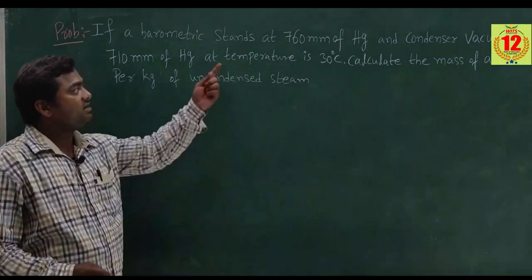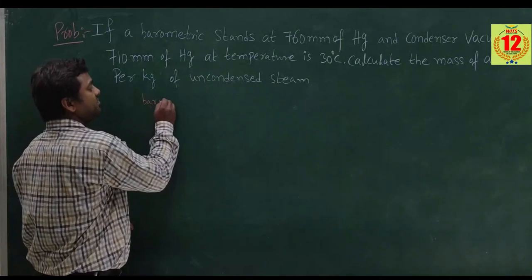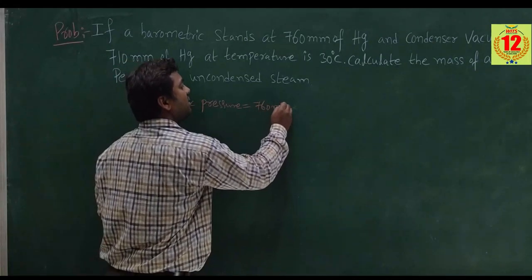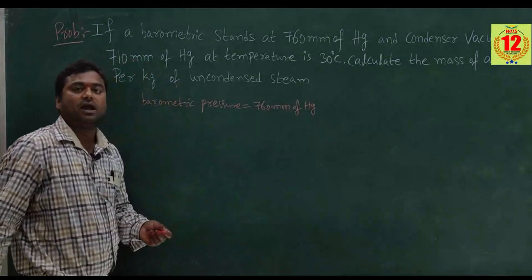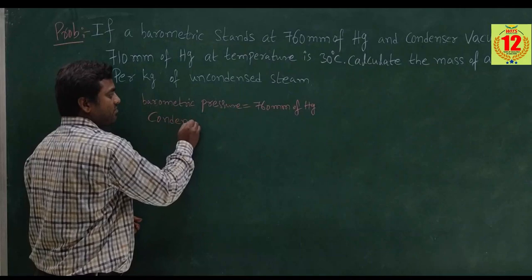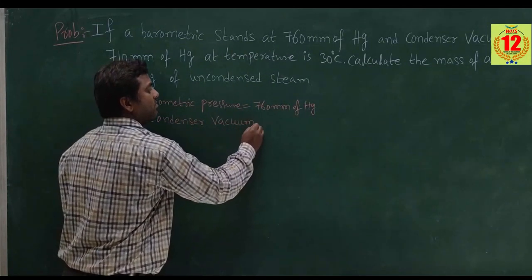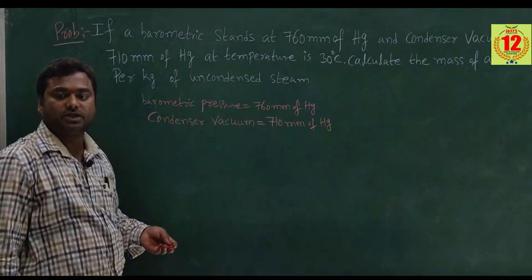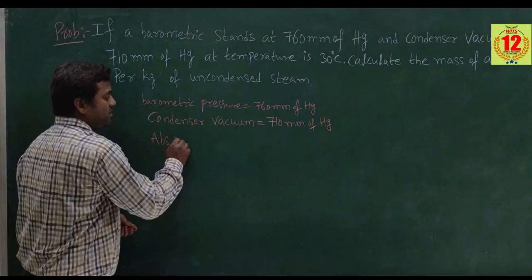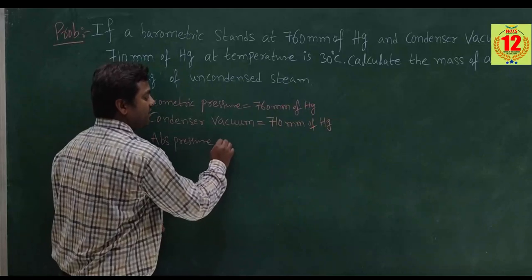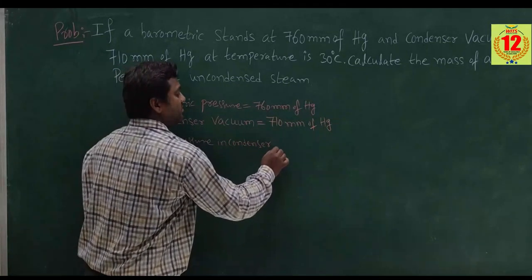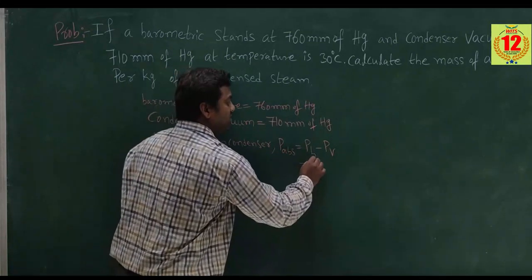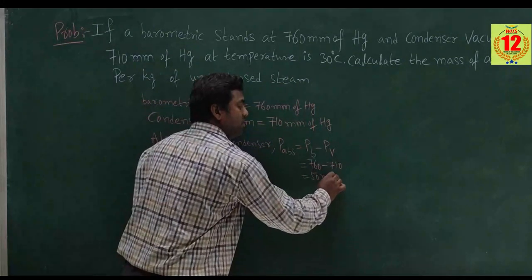First, write the given data: the barometric pressure is given as 760 mm of Hg, and the condenser vacuum is given as 710 mm of Hg. The absolute pressure in the condenser can be calculated as equal to barometric pressure minus vacuum, that is 760 minus 710 which is equal to 50 mm of Hg.